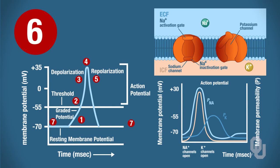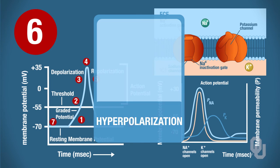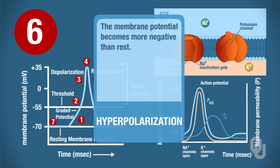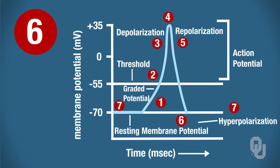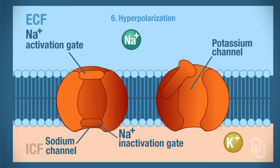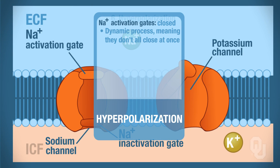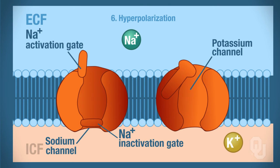The next phase is hyperpolarization, where the membrane potential becomes more negative than rest — going from negative 70 millivolts down to about negative 80 or negative 85 millivolts. At this point, your voltage-gated activation gates are now closed — dynamically, they close throughout hyperpolarization. The voltage-gated sodium inactivation gates close temporarily; remember, the inactivation gate responds to whatever the activation gate does, so when the activation gate closes, the inactivation gate closes briefly and then pops open. There's only a split second where both gates are actually closed.